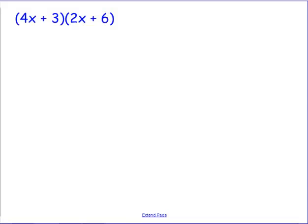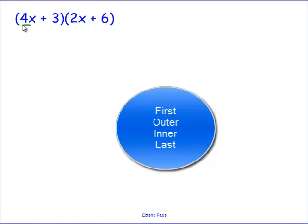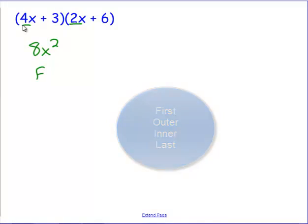Again, first, outer, inner, last. So the first terms, first times first, gives me 8x squared. Then we take the outer times the outer. The outside most on the left and the outside most on the right. 4x times 6 gives me 24x. That's first outer. Now inner terms, the inside most terms. 3 times 2x gives me plus 6x and then the last terms would be 3 and 6, which gives me 18.